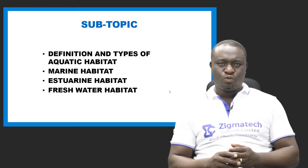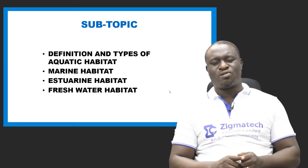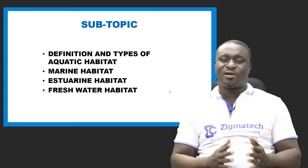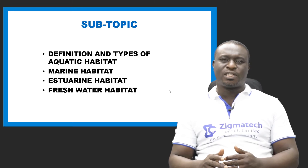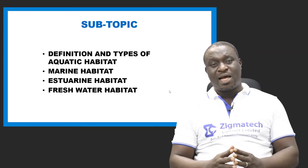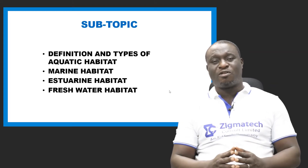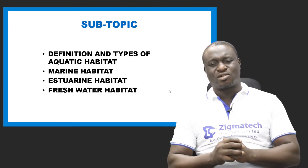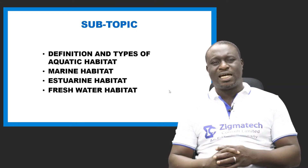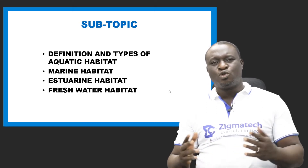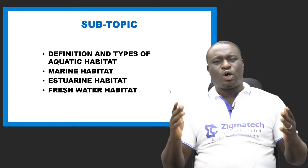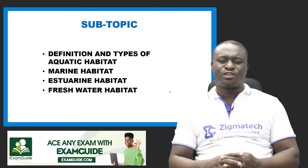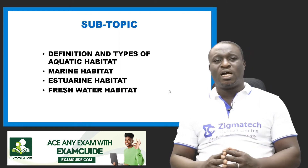We're also going to be talking about estuarine or brackish water habitat — its types, characteristics, organisms both plants and animals, food chain, and factors affecting it. And lastly, we're going to be talking about freshwater habitat — its types, major zones, characteristics, organisms, adaptive features, food chain, and abiotic factors that affect freshwater habitat.